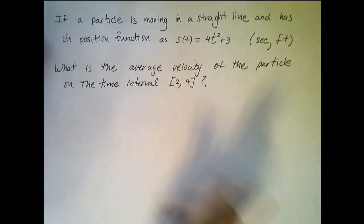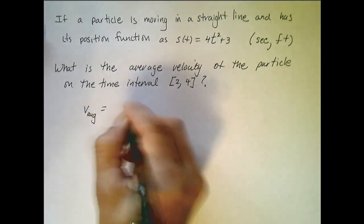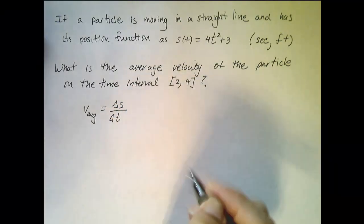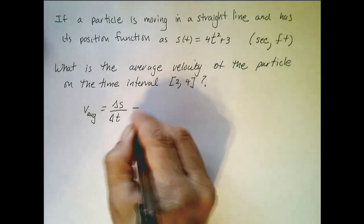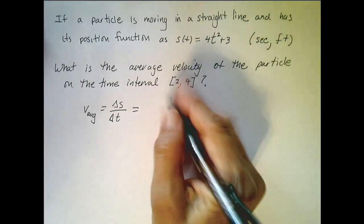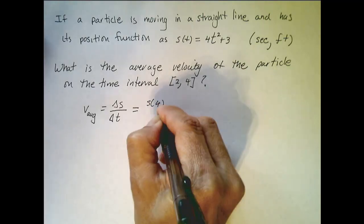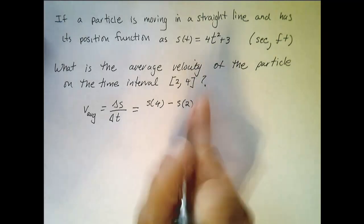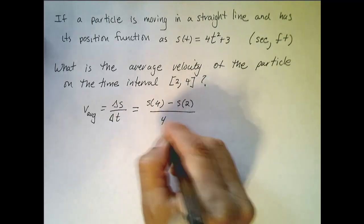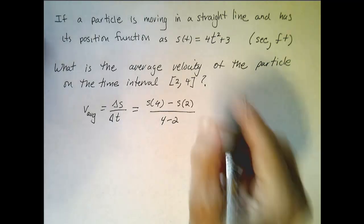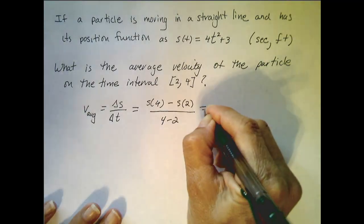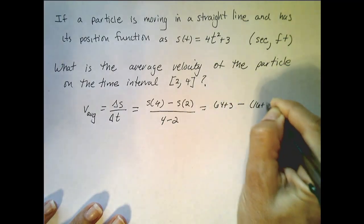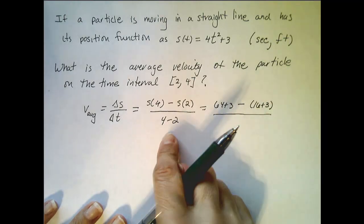Well, let's see if we can calculate that. So the average velocity is equal to the change in distance divided by the change in time. So in this particular example, it's going to be the position at 4 seconds minus the position at 2 seconds, so there's my change in distance divided by the change in time, 4 minus 2. So plugging this into my formula, I get 64 plus 3 minus 16 plus 3, and all that's divided by 2.